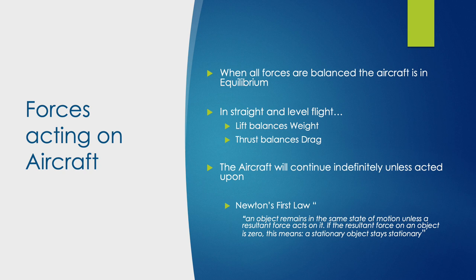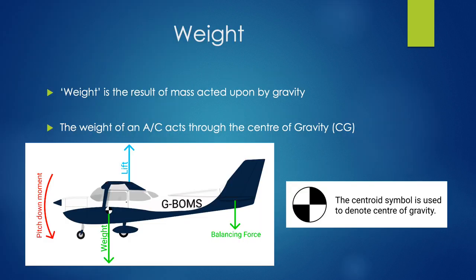This covers Newton's first law: an object remains in the same state of motion unless a resultant force acts on it. If the resultant force on an object is zero, a stationary object stays stationary — so unless any force is acted upon the aircraft, it's going to stay exactly where it is. Weight acts through a central point known as the centre of gravity, which can be moved within the aircraft, and that will be covered in more detail in the flight planning and performance section.